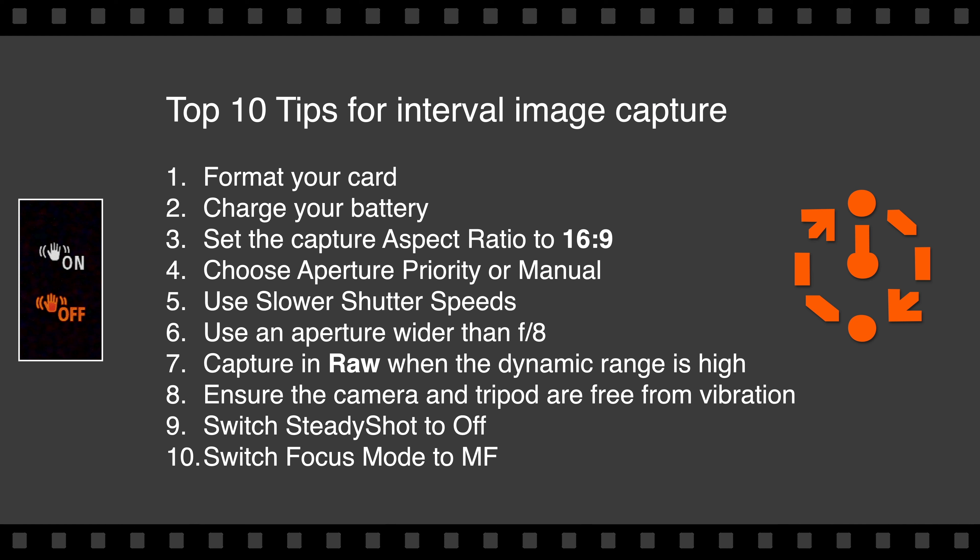Number eight: ensure the camera and tripod are free from vibration — don't put the tripod on a boardwalk with people moving across it and shaking the camera. Number nine: switch steady shot to off. That's really important for non-Sony lenses because you don't want those gyros creating a little bit of vibration when you're doing slow shutter speeds. And number 10: switch the focus mode to manual focus. You don't want the focus changing between each and every frame — otherwise you're going to get a shaking effect as the camera tries to zoom in and out in micro amounts.